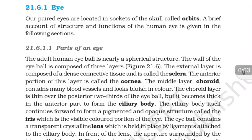Hello everyone and welcome to this channel. Today we will read about the human eye. Our paired eyes are located in sockets of the skull, and these sockets are called orbits. A brief account of the structure and functions of the human eye is given in the following sections.